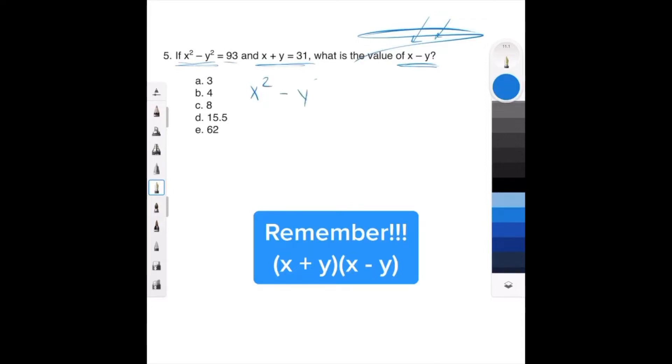Anytime you have something squared minus something squared, it factors really easily. Here's how you do it. All you do is: what times itself gives you x squared? x and x, right? What times itself gives you y squared? y and y. And because the middle sign is a negative, you make one of these positive and one of these negative, because a positive times a negative gives you a negative.